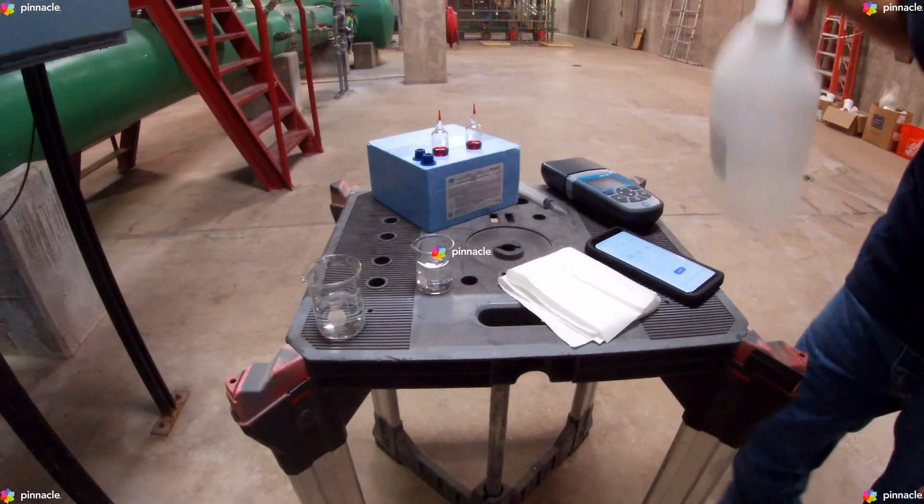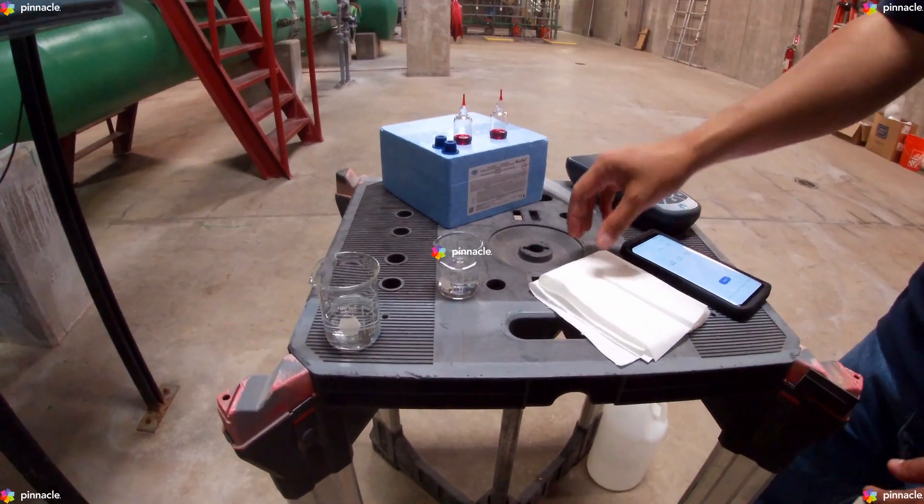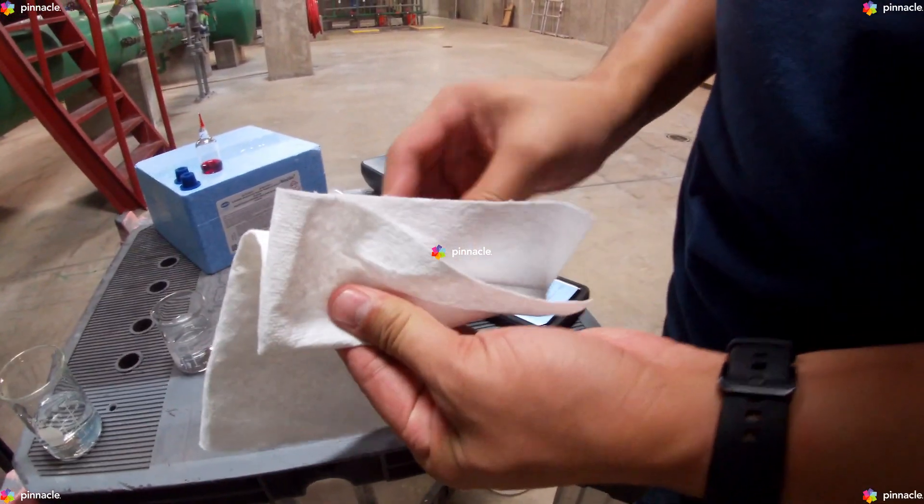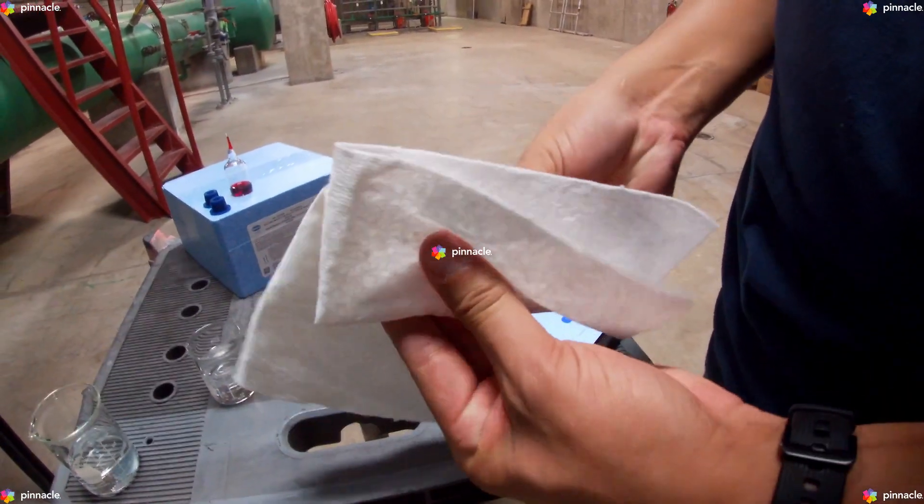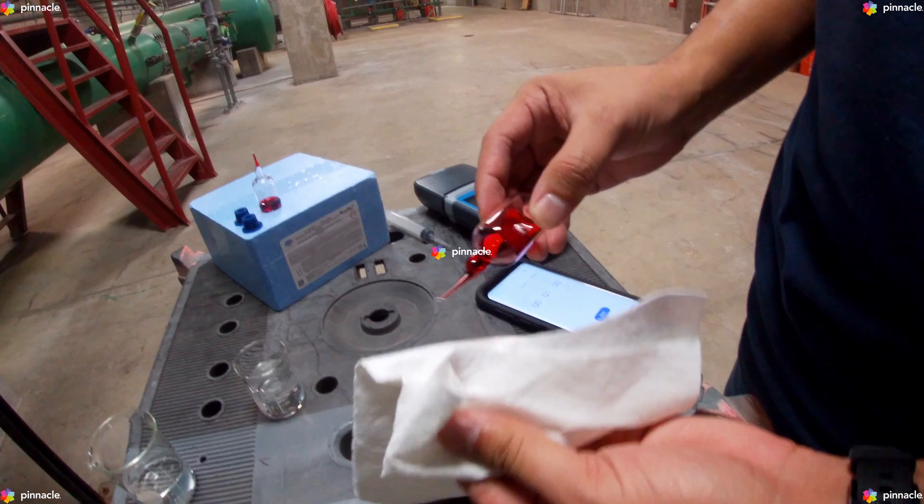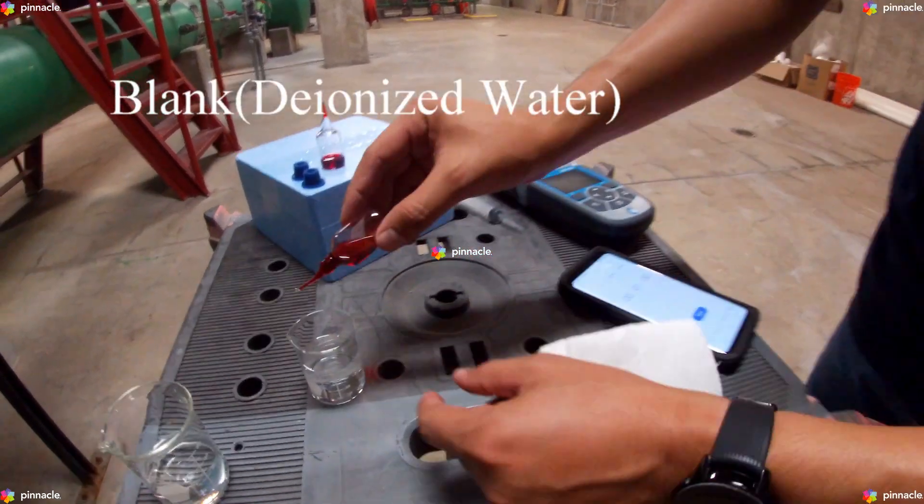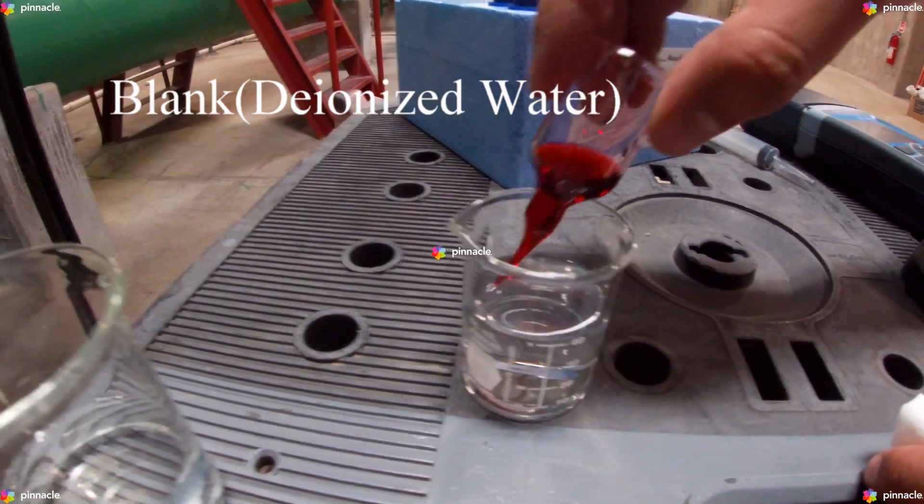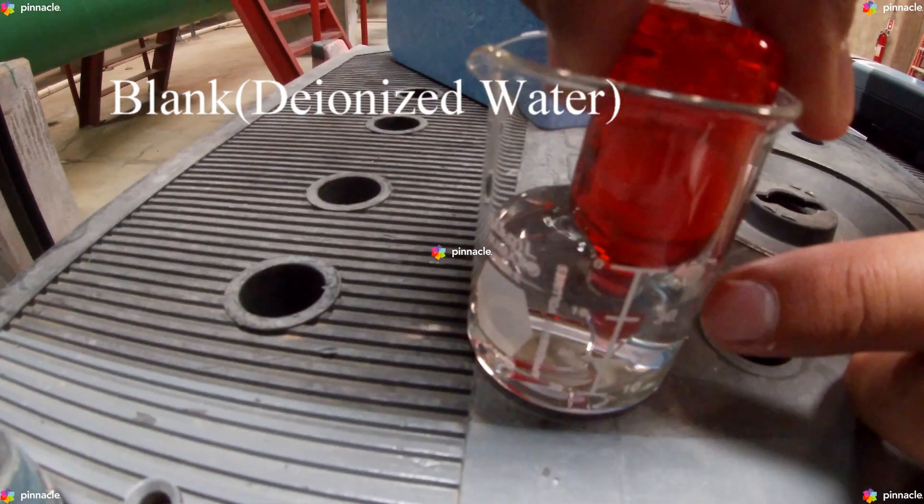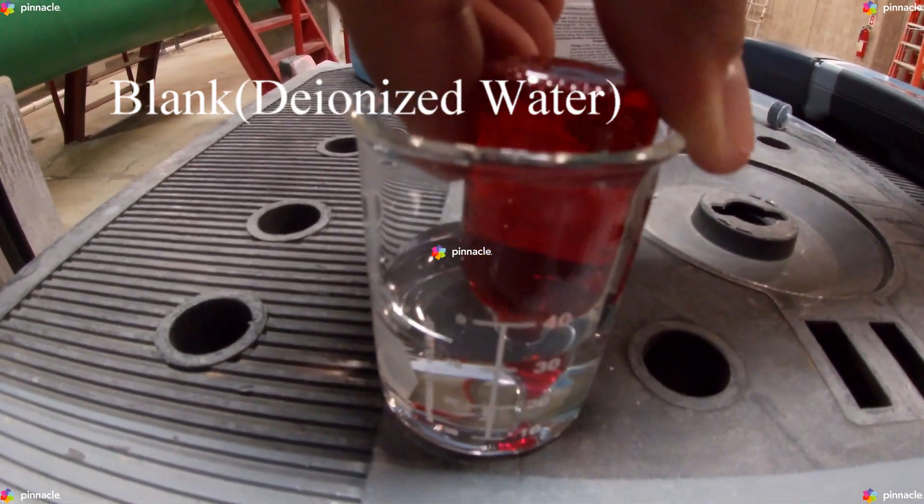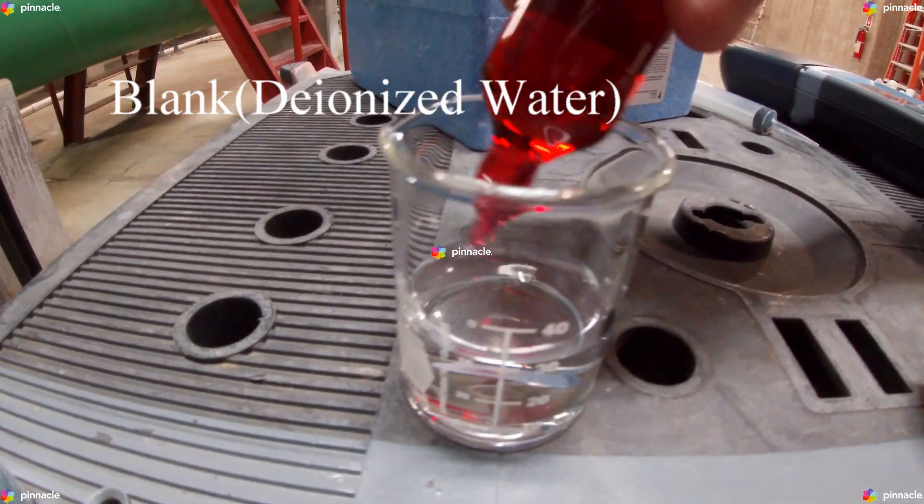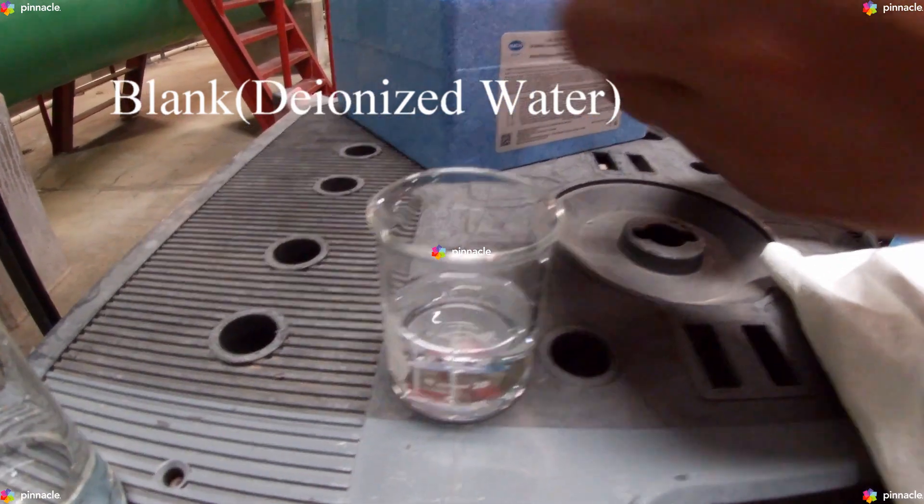We will then grab an AccuVac Ampoule and make sure to properly clean the surface and the tip before submerging into the beaker itself. We will submerge the tip of the ampoule and break the tape. Keep the tip immersed while the AccuVac Ampoule fills completely. We will quickly invert the AccuVac Ampoule several times to mix.